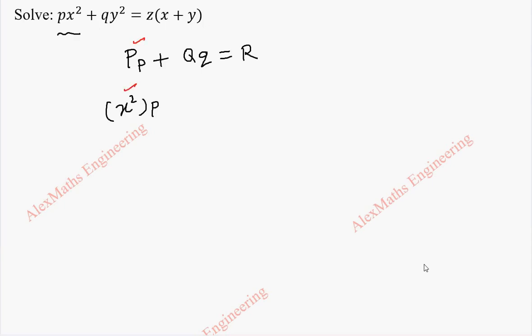The first term is rewritten as x square into small p because from this by comparison we can understand what is capital P. In the same way, the second term is y square into small q and on the other side it is z into x plus y. So, capital P is x square, capital Q is y square, capital R is z into x plus y.